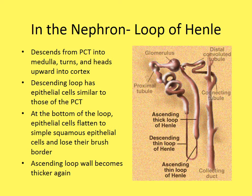Tubular filtrate then descends into the loop of Henle, which makes a U-turn shape. The descending loop has epithelial cells similar to the PCT — cuboidal. At the bottom of the loop, cells flatten to simple squamous and lose their brush border. The ascending loop becomes thicker again as it heads back up.